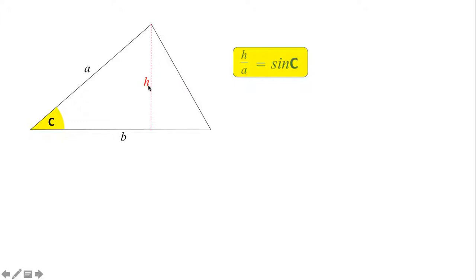H standing for the height rather than standing for hypotenuse. The hypotenuse is the side labeled as a, so h over a, opposite over hypotenuse, equals sine C. Multiplying both sides by a to get rid of the fraction, we get h equals a times sine C.